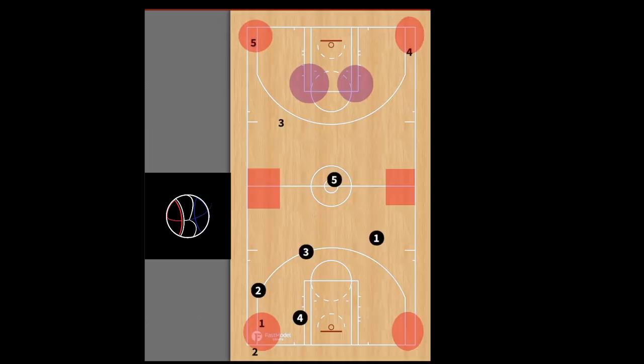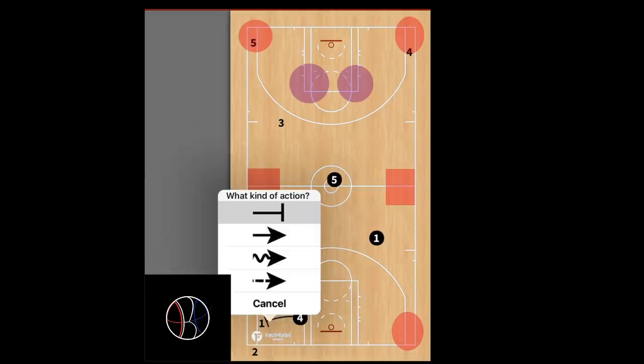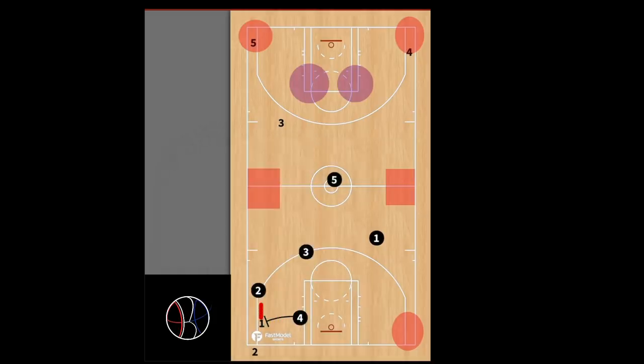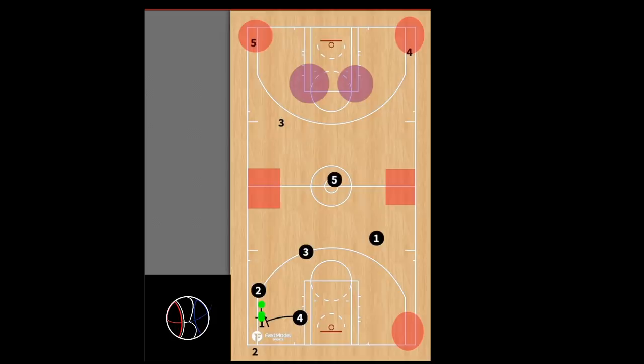They're denying the middle of the court. Number two is denying on the sideline and ready to put pressure. As soon as the ball is passed in, number two passes to one and immediately there's pressure put on by number four and by number two. So two and four are physically adding pressure, while the baseline and the sideline are two invisible defenders also adding pressure.